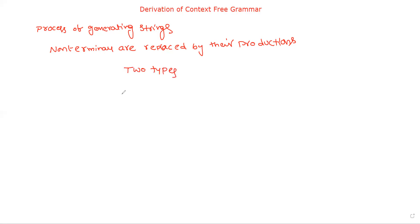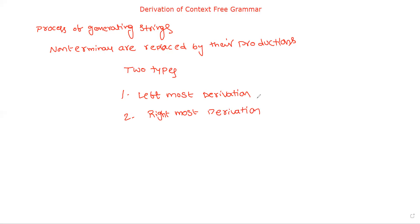Derivation from context-free grammar is divided into two types: leftmost derivation and rightmost derivation. The concept is the same — replacing a non-terminal by its production — but the main difference is this: if more than one variable appears on the right-hand side, in leftmost derivation we replace the leftmost variable first, and in rightmost derivation we replace the rightmost variable first.